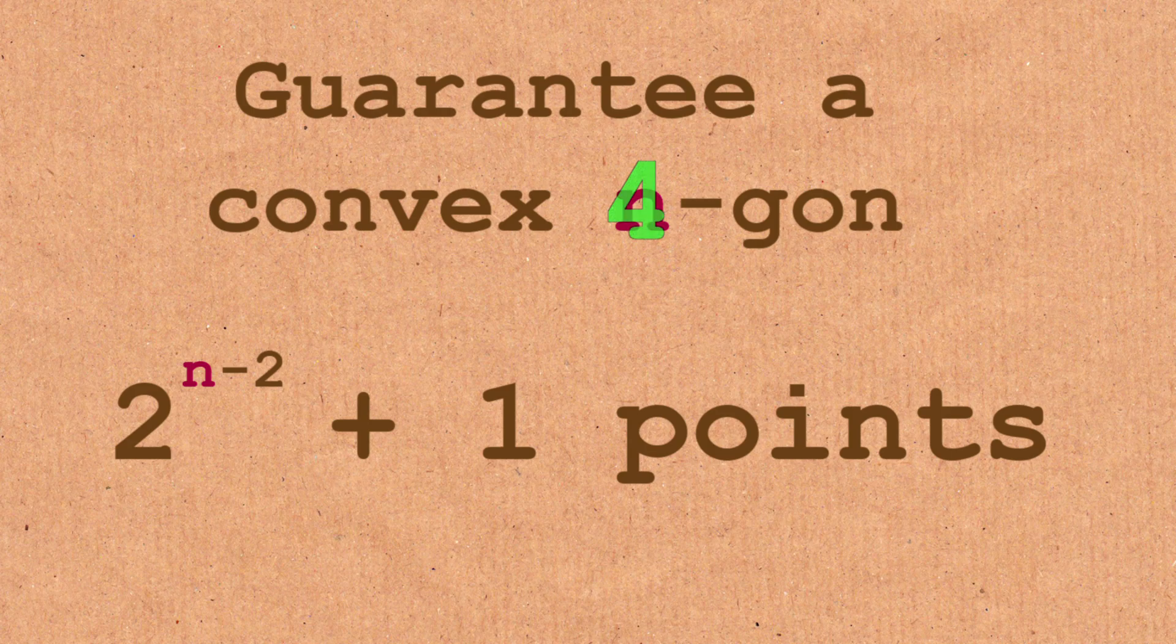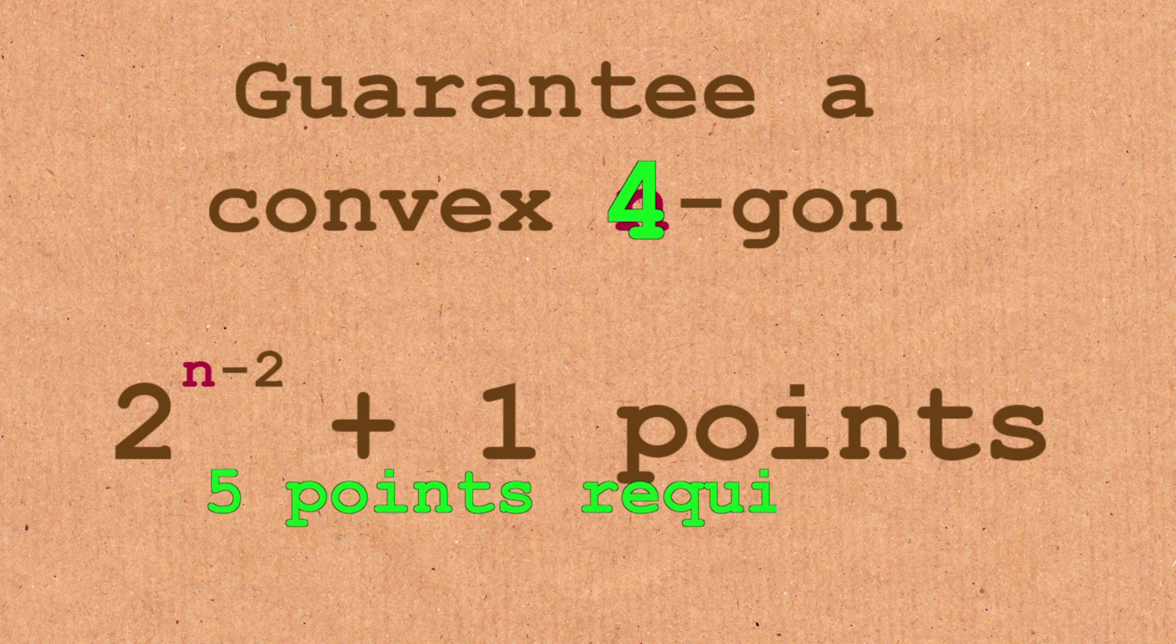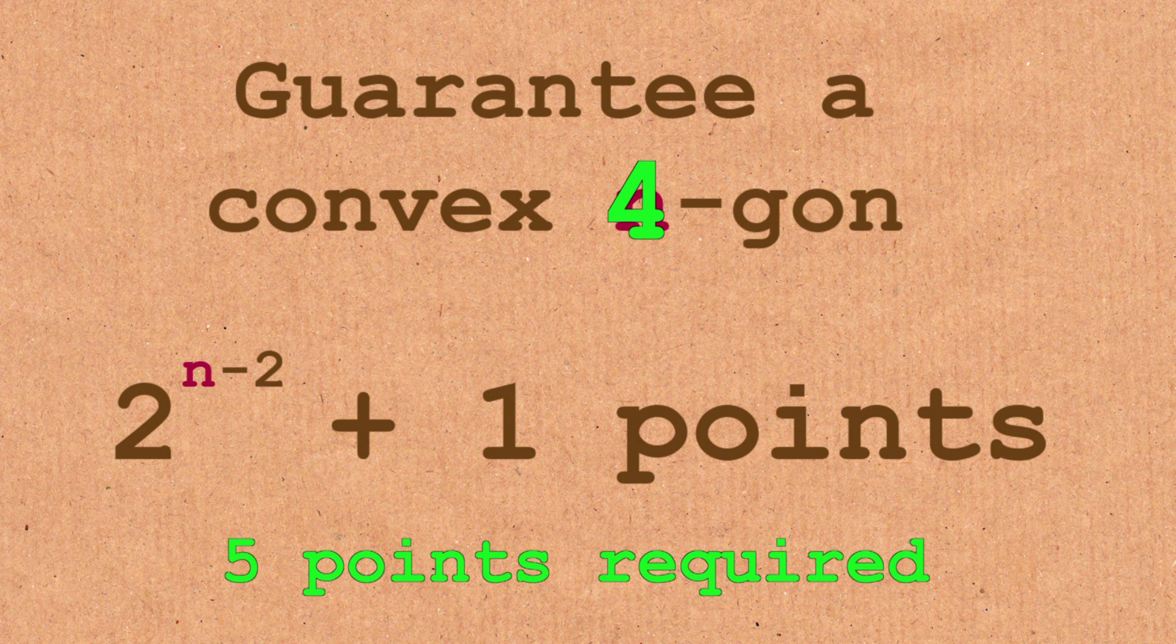17 is enough. And if you put n is equal to four, then you want the convex four-gon. 2^2 + 1 is five. That's our five. So the guess is that that's exactly the right answer.